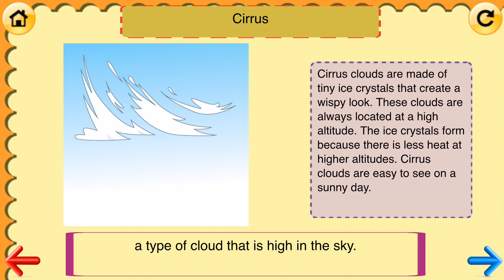Cirrus: a type of cloud that is high in the sky. Cirrus clouds are made of tiny ice crystals that create a wispy look. These clouds are always located at a high altitude. The ice crystals form because there is less heat at higher altitudes. Cirrus clouds are easy to see on a sunny day.